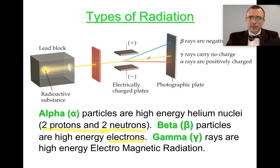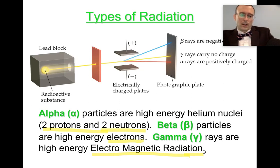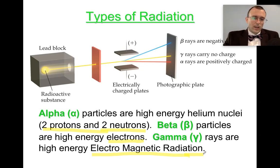Gamma rays are not affected at all, so they're composed of some kind of chargeless beam — there's no charge to the gamma beam at all. It was determined later on that gamma rays are actually just electromagnetic radiation, starting with radio waves going all the way to gamma rays, gamma rays being the highest-energy electromagnetic radiation.